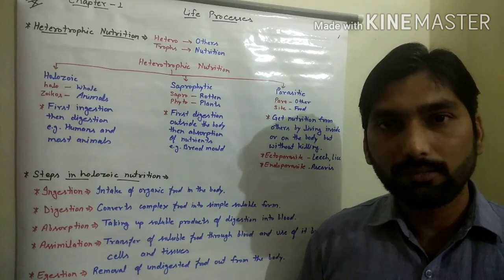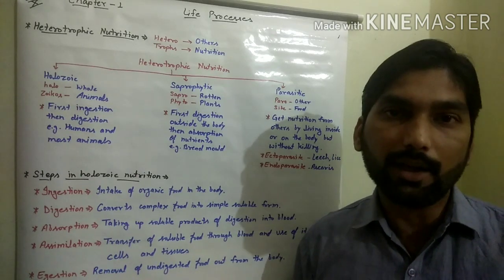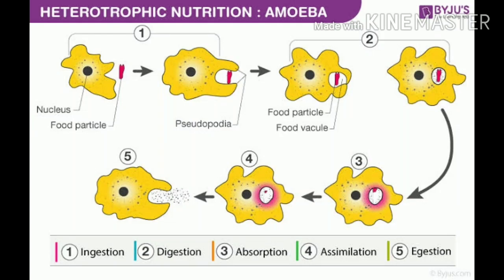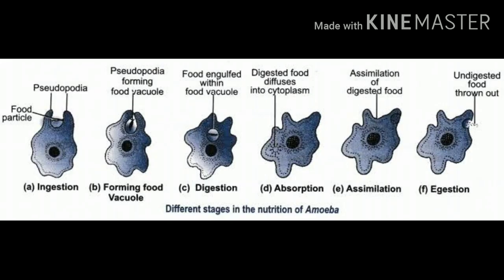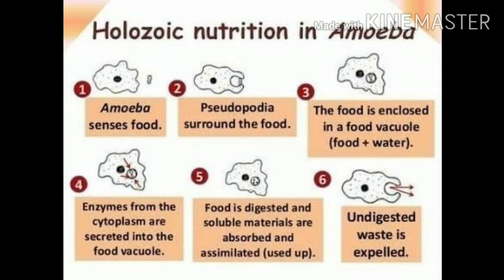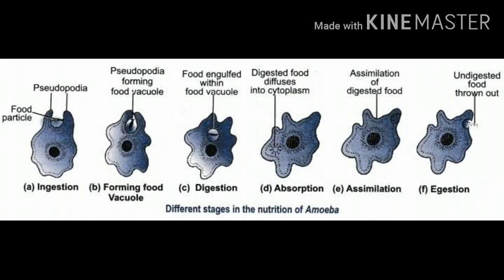Next we discuss nutrition in Amoeba. Amoeba is a unicellular protozoan living in water that feeds on algae and small protozoans. It is known for its irregular shape and finger-like projections called pseudopodia. When Amoeba senses food nearby, it creates pseudopodia that surround the food completely, forming a food vacuole. Digestive enzymes from the cytoplasm are released into the vacuole, digesting the food. The vacuole then moves through the cytoplasm for absorption and assimilation, and undigested material is released by rupturing the cell membrane.